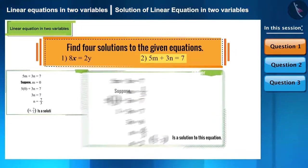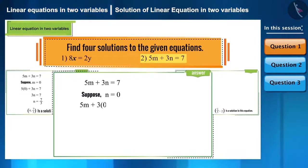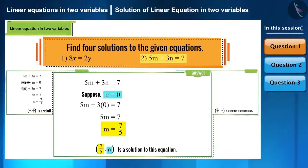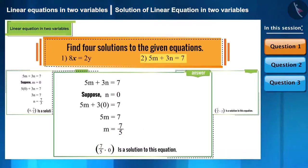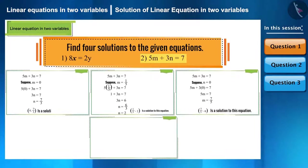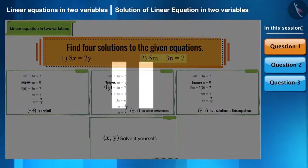Now let's take n as 0 and find the value of m by substituting it in the equation. We get m as 7 by 5, hence (7/5, 0) is another solution to this equation. Now find one more solution yourself — you can pause the video.